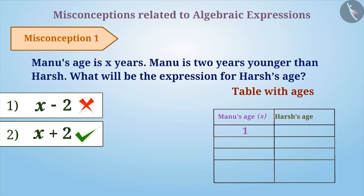Harsh will be 3 years old when Manu is 1 year old. Harsh will be 4 years old when Manu is 2 years old. And similarly, the table can be extended. By identifying the relationship between numbers, it can be concluded that Harsh's age is 2 years more than Manu's age. So, the correct answer to the given question is x plus 2.